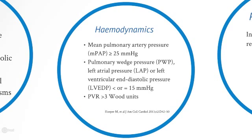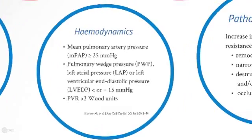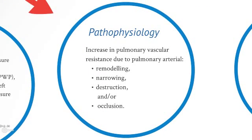It also requires a pulmonary wedge pressure, or left atrial pressure, or left ventricular end-diastolic pressure of less than or equal to 15 mmHg, and a pulmonary vascular resistance of greater than 3 Wood units. The pathophysiology behind precapillary pulmonary hypertension consists of an increase in pulmonary vascular resistance due to remodelling, narrowing, destruction, and/or occlusion of the pulmonary arteries.